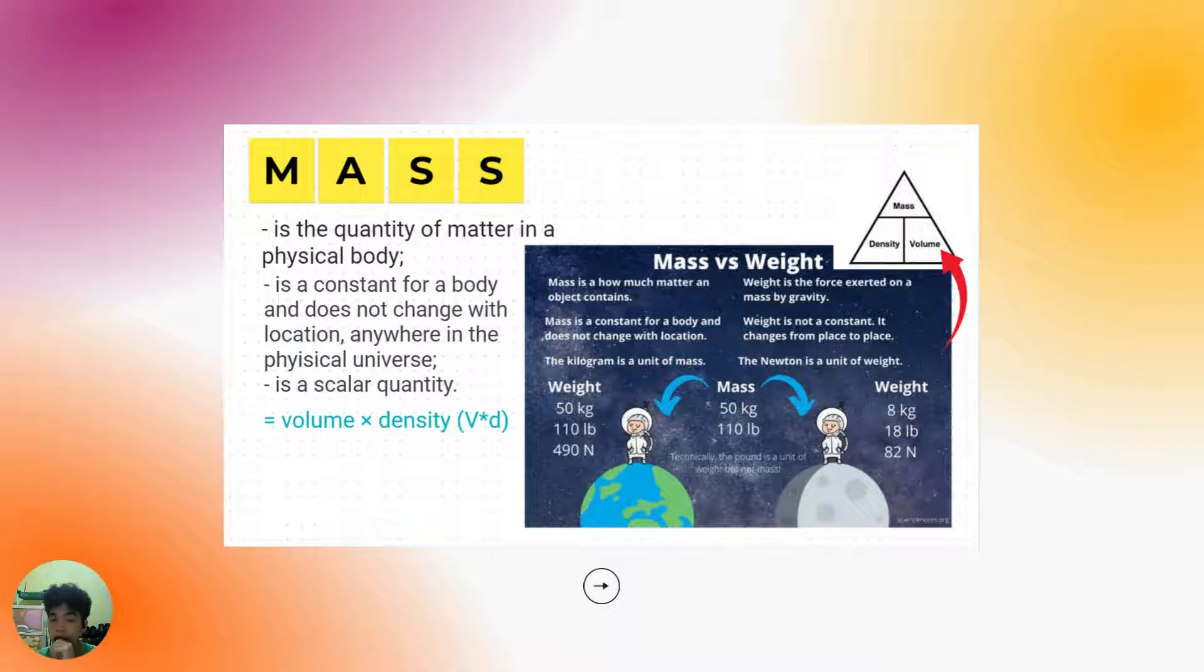Mass is the quantity of matter in a physical body. It is a constant for a body and does not change with location anywhere in the physical universe. Mass is also a scalar quantity, which means quantities that are unaffected by changes to a vector space basis and only have magnitude.